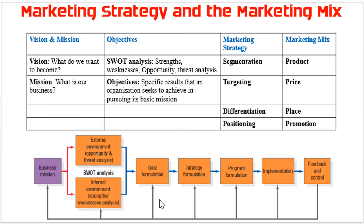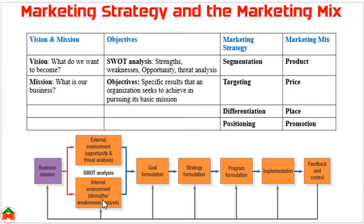Here we can see another diagram showing the company-wide strategic process. Starting with the mission statement, then by doing SWOT analysis we determine the company goal, formulate the strategy, formulate the program, implement the program, and finally take feedback and control measures. In SWOT analysis, we analyze the external environment for opportunities and threats, and the internal environment for strengths and weaknesses of the company.